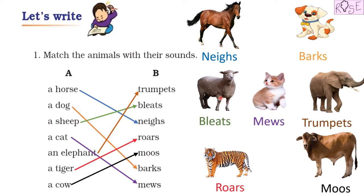Now what do we get to know? We came to know that different animals make different sounds. Like a horse neighs, a dog barks, a sheep bleats, a cat mews, an elephant trumpets, a tiger roars, and a cow moos.